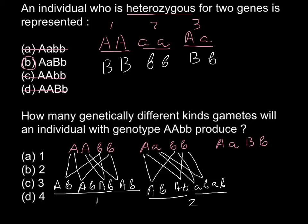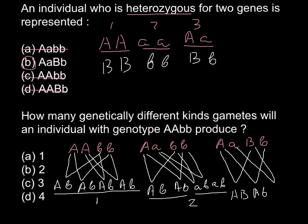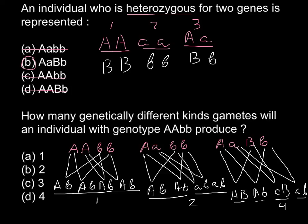When both genes are in heterozygous form, we may have capital A capital B, capital A small b, small a capital B, and small a small b — four different combinations. So we have one, two, or four possible gamete types. Answer C — three combinations — is not correct at all, because with two genes we cannot get three combinations.